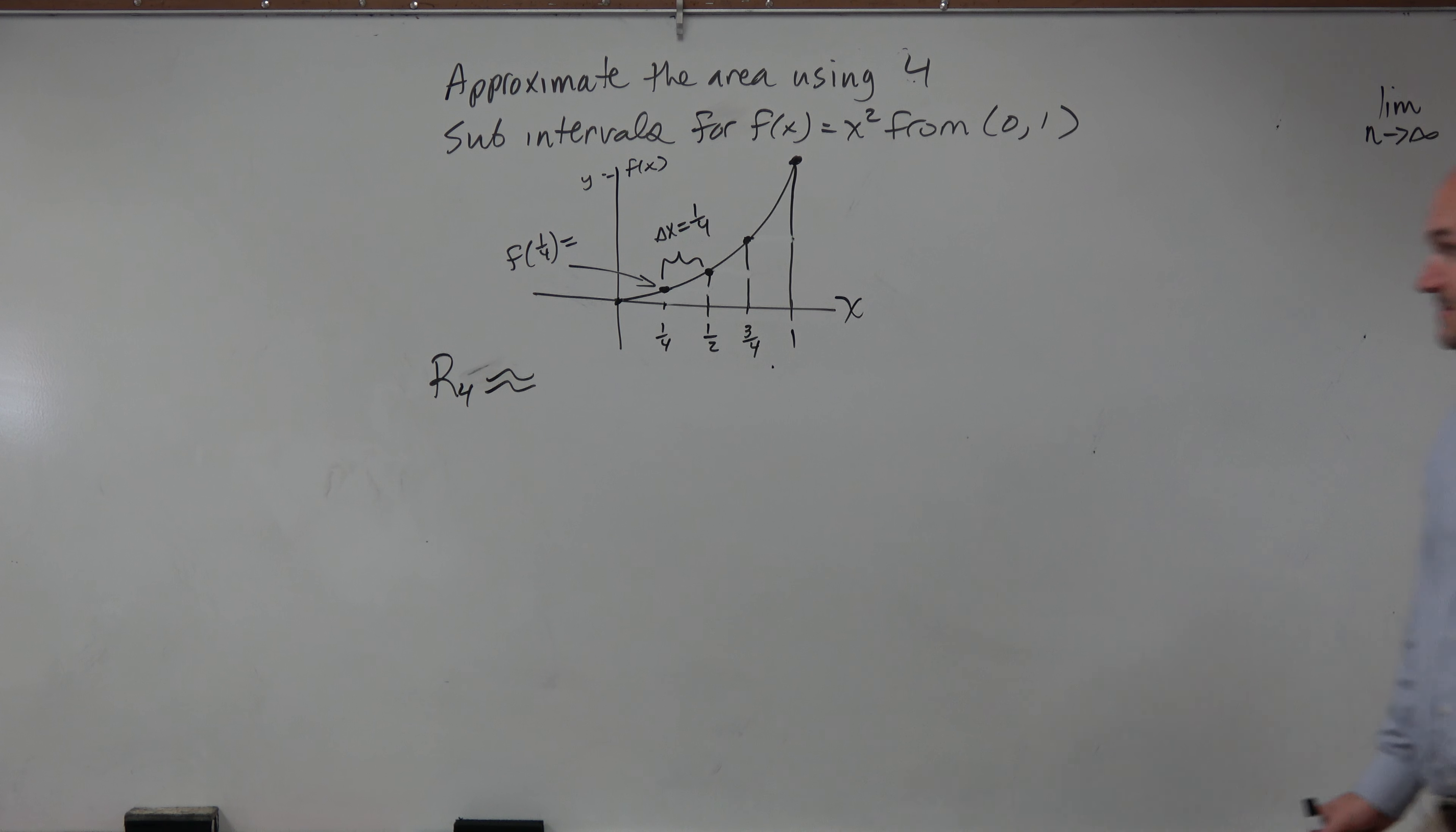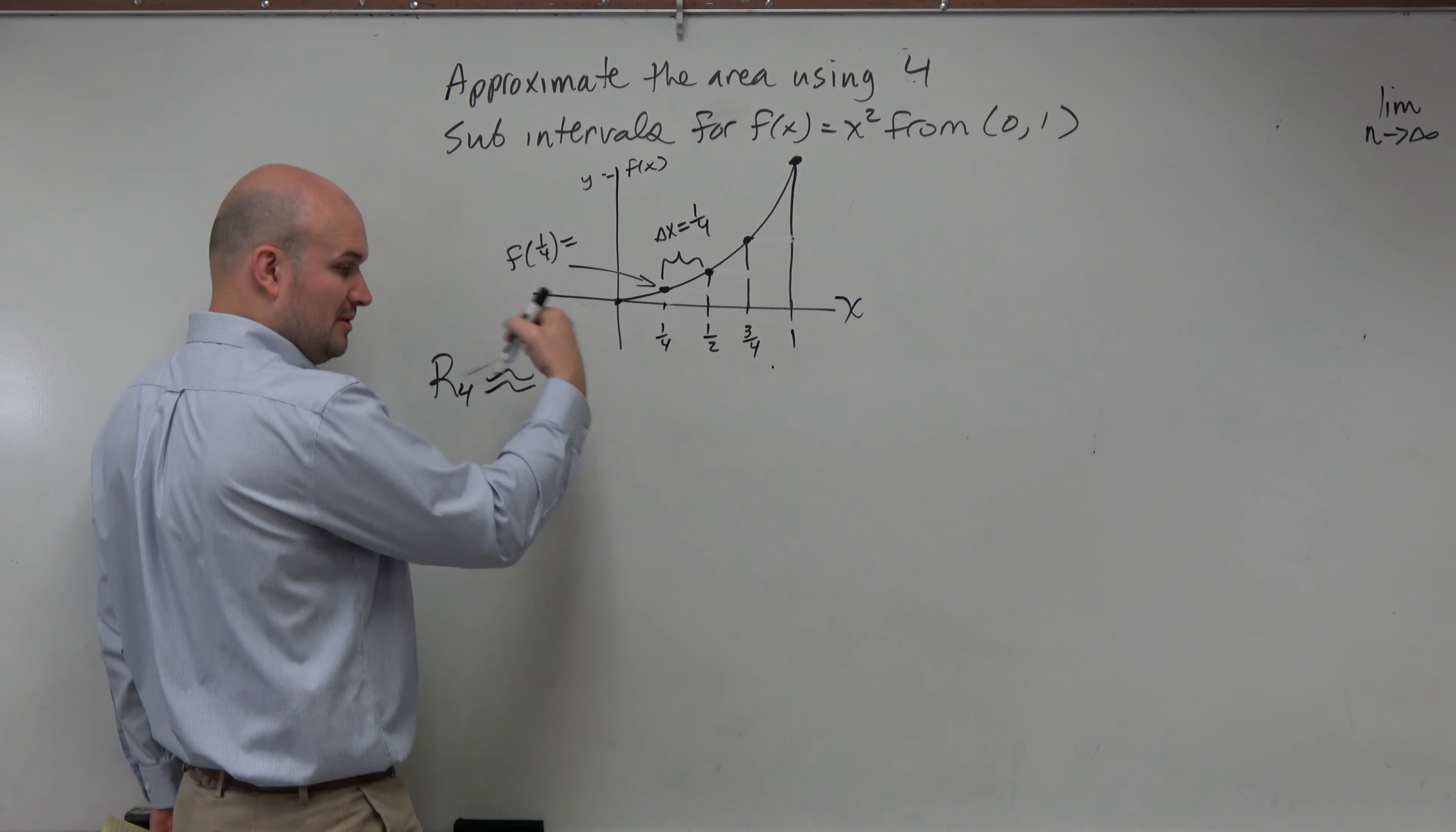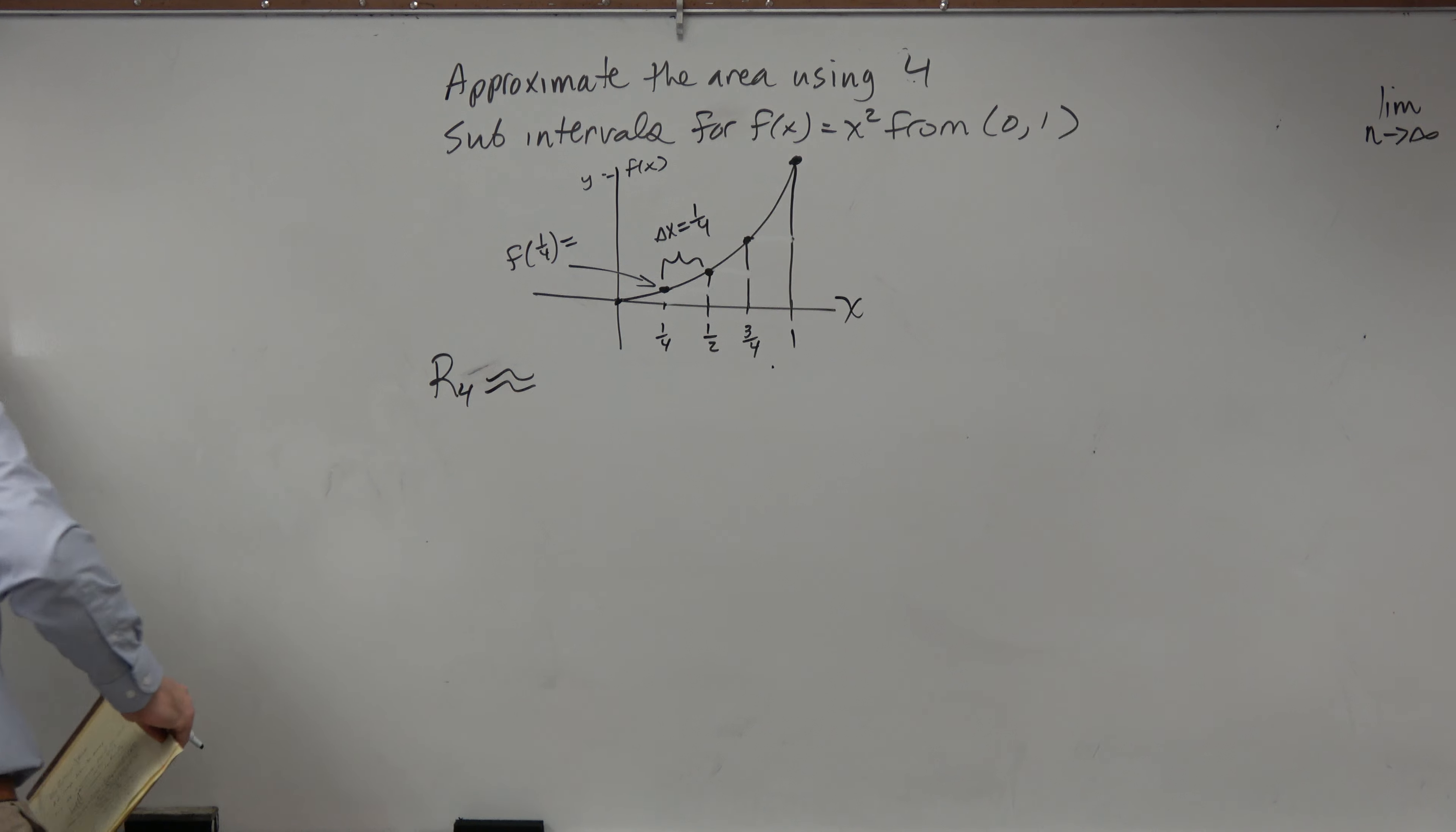So the right-hand approximation is, again, we have our f of 1/4th representing our height. But now we're going to start from the right-hand side. And here, let's do a different color.